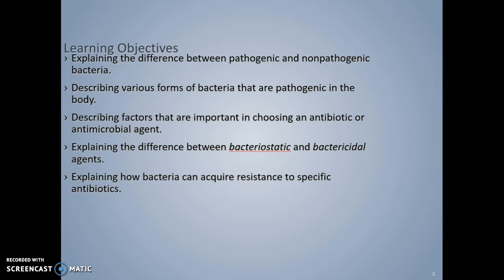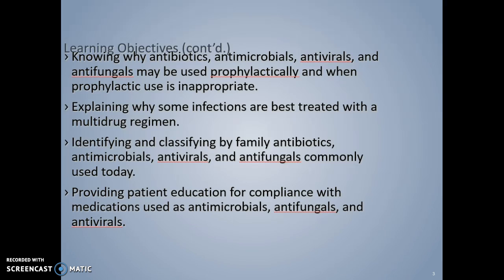Here are our learning objectives: being able to explain the difference between pathogenic and non-pathogenic bacteria; describing various forms of bacteria that are pathogenic in the body; describing factors that are important in choosing an antibiotic or antimicrobial agent; being able to explain the difference between bacteriostatic and bactericidal agents; and explaining how bacteria can acquire resistance to specific antibiotics. We also need to know why antibiotics, antimicrobials, antivirals, and antifungals may be used prophylactically, and when prophylactic use is inappropriate.